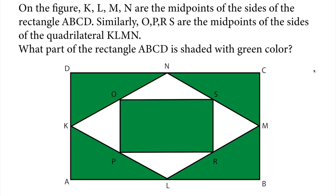What part of the rectangle A, B, C, D is shaded with green color? So we will find the fraction of green to total area. Basically, we will exclude white area.